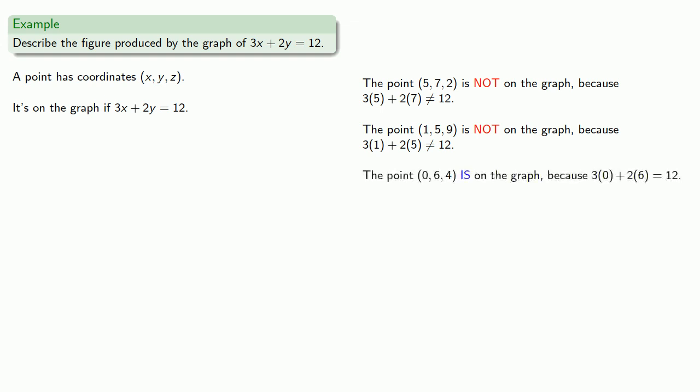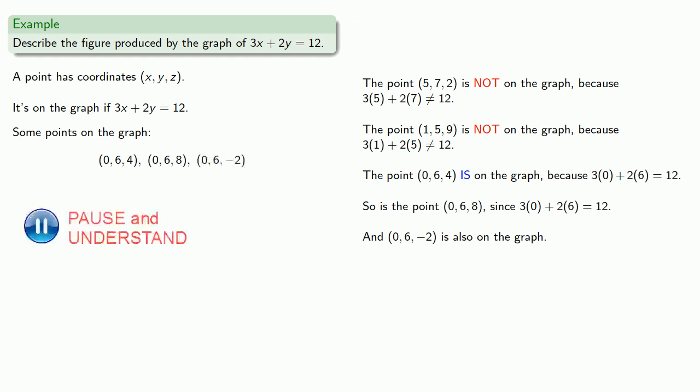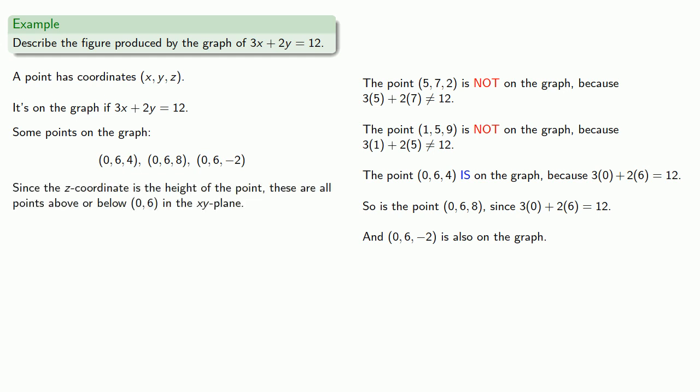On the other hand, the point 0, 6, 4 is on the graph because 3 times x plus 2 times y is in fact equal to 12. Now you might notice that the z coordinate of this point wasn't used in our verification, and what that means is that we can pick any z value that we want to. So the point 0, 6, 8, well that's also on the graph since 3 times x plus 2 times y is equal to 12, and likewise 0, 6, minus 2 is on the graph.